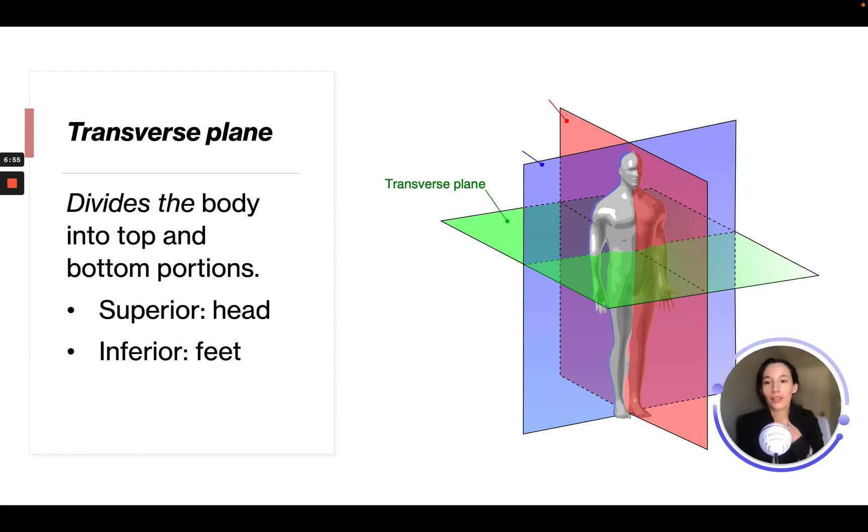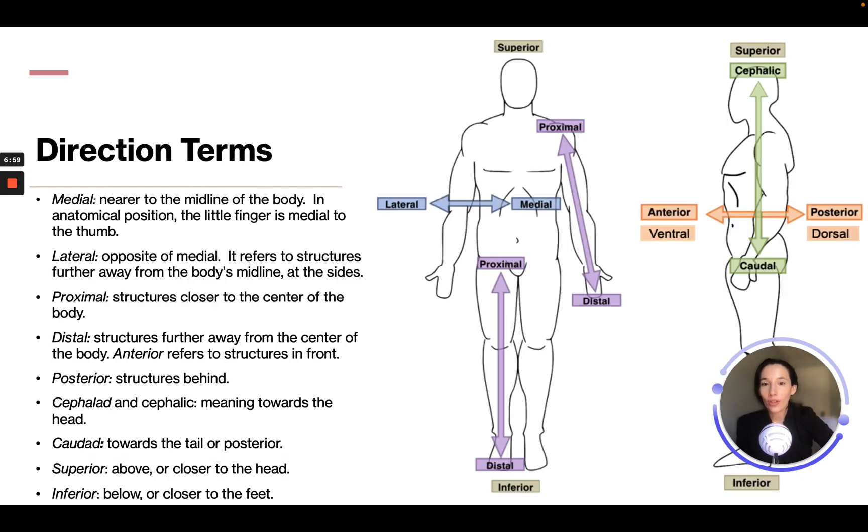Okay, so other terms that you need to understand is direction in terms of the body. So medial is going to mean near the midline of the body. In anatomical position, the little finger is medial to the thumb. So if someone is standing, this would be anatomical position with the arms down and the hands out with the thumbs on the outside. The little finger is medial to the body—it's going towards the midline because medial is nearest to the midline. Lateral is the opposite of medial and refers to structures that are further away from the midline at the side. So if we think, the thumb is going to be lateral to the pinky finger because it's away from the midline.